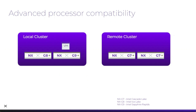Live migration of a virtual machine is only possible when the processor on the destination host supports every feature that the virtual machine is using. Nutanix clusters have a long history of automatically detecting hosts in a cluster with different generations of processor and identifying the common features that can be passed to guests while enabling live migration between any host in the cluster.